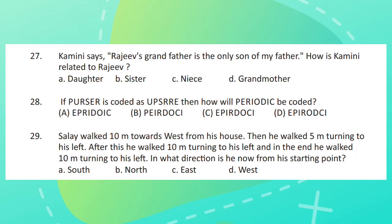Question 28. If Purser is coded as UPSRRE, then how will Periodic be coded?